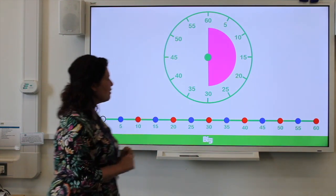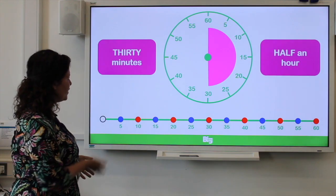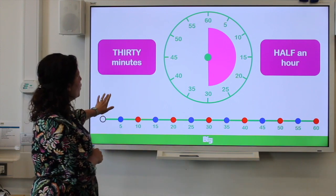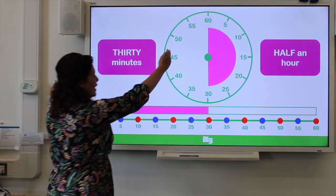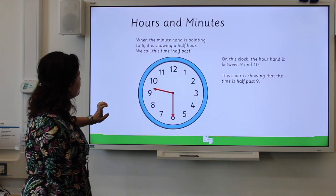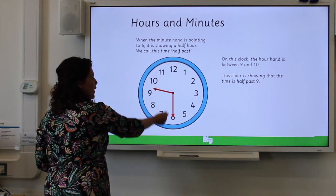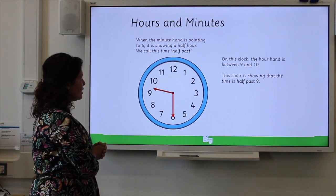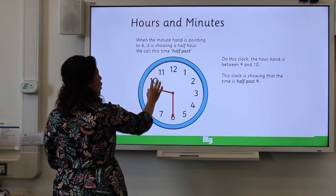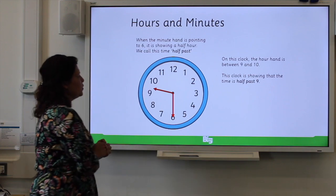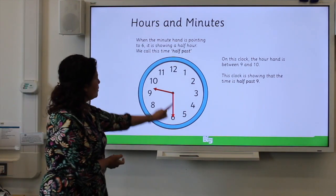So now we're on to half past. Thirty minutes is half an hour. If someone says you've got half an hour to do your work, you know you've got thirty minutes. And if we had to put this in a bar model, we'll know that we've got exactly half of it, because we've got half an hour. So where is the long hand, the minute hand, on a half past clock? It's pointing at the six, always pointing at the six. And the hour hand goes past the hour it has just been and stops, is in between, halfway in between those two hours. So in this clock, it would be half past nine. We've got half past nine.